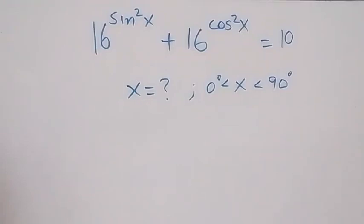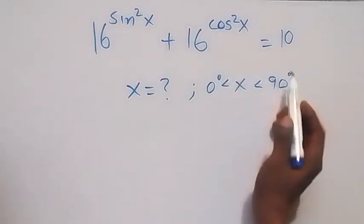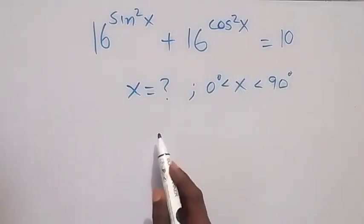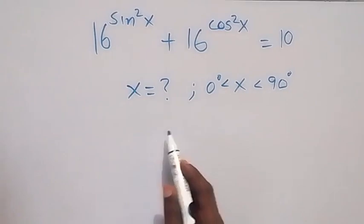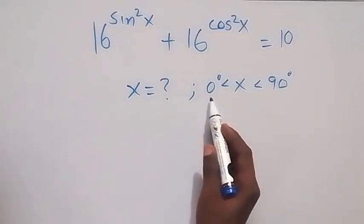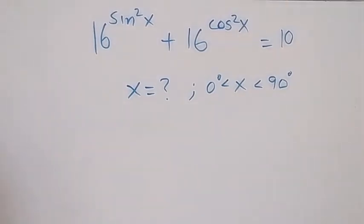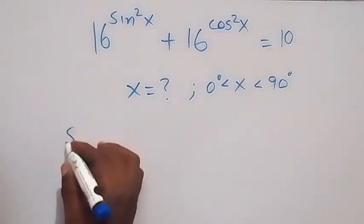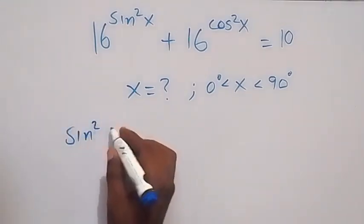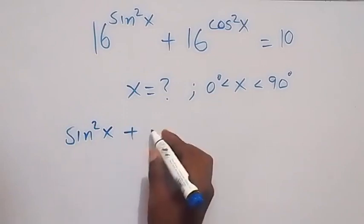Hello, you are welcome. How to solve this nice trigonometry problem: we have 16 raised to power sine square x plus 16 raised to power cos square x equals to 10. We have to find the value of x such that x is between 0 degrees and 90 degrees.